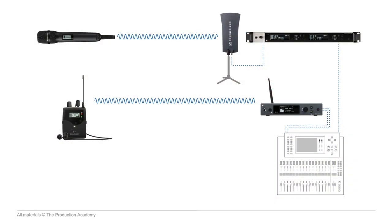When we're calculating latency, we really have to think about the entire signal chain. For example, say our digital wireless mic has three milliseconds of latency, and the mixing console has about one millisecond, and it's sent back through an analog wireless system to my in-ears, which, since it's analog, is zero latency. So we have about four milliseconds altogether, which is totally acceptable in most situations.